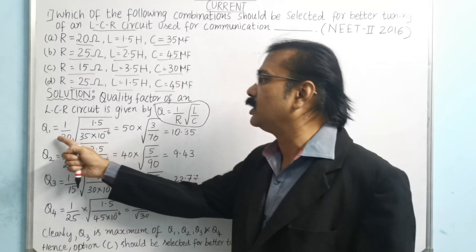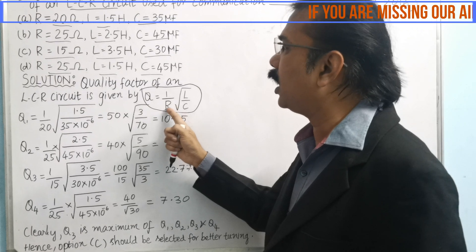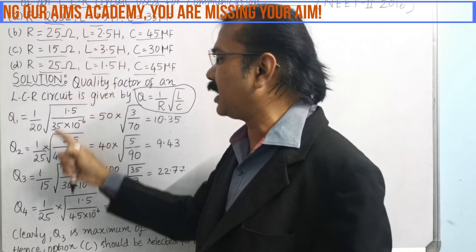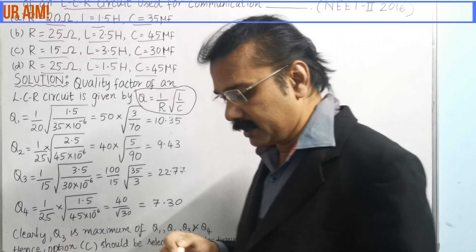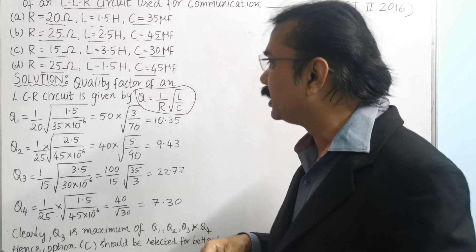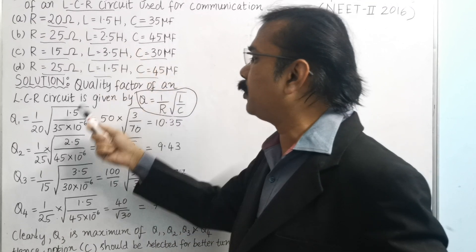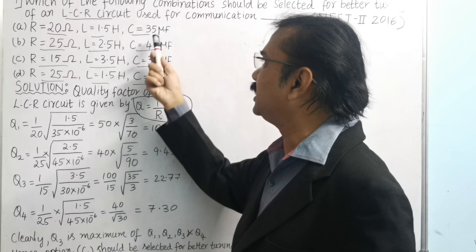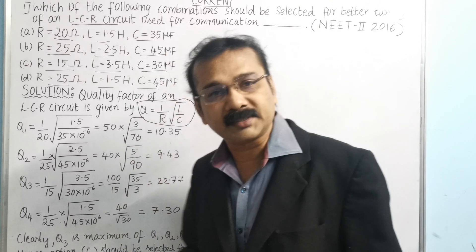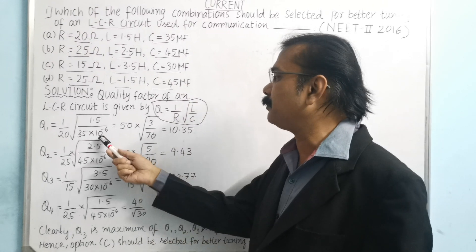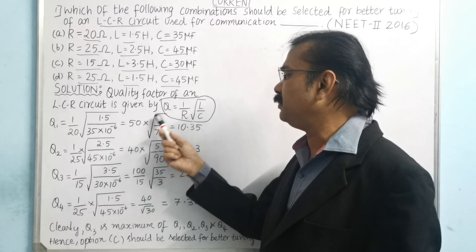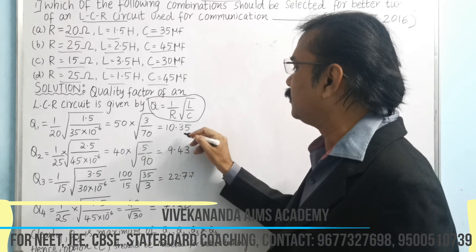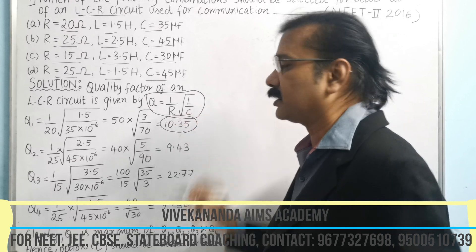If you substitute the formula for the first case — the value of R is 20, the value of L is 1.5, and C is 35 μF which is 35 × 10⁻⁶. If you simplify this, we get Q₁ = 10.35.